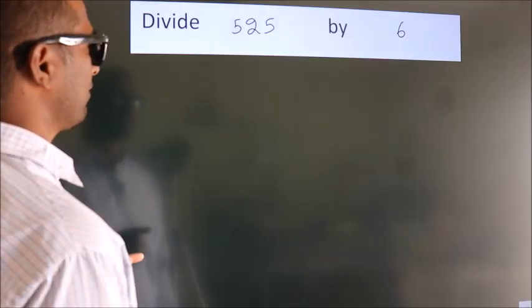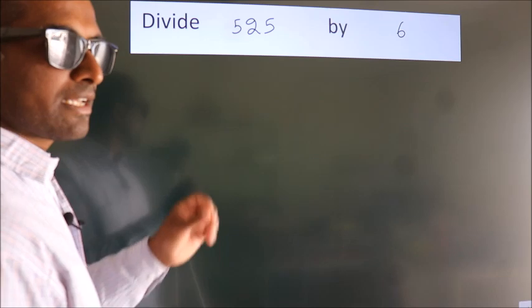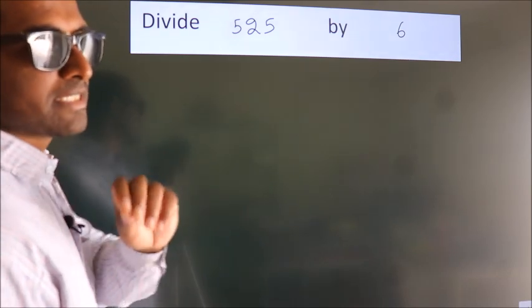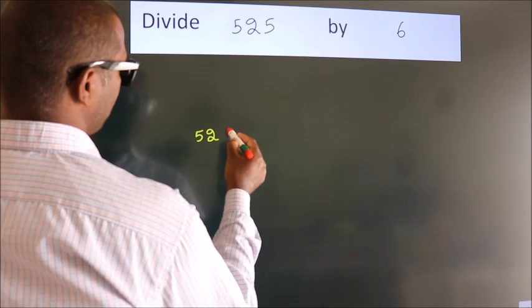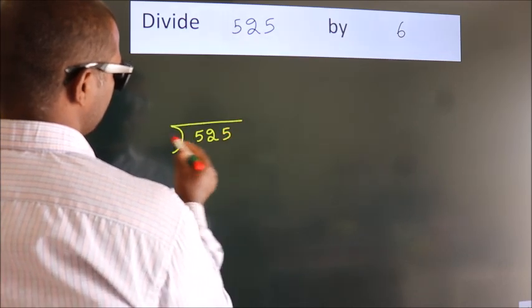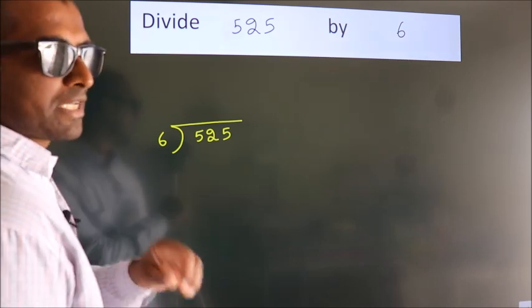Divide 525 by 6. To do this division, we should frame it in this way. 525 here, 6 here. This is your step 1.